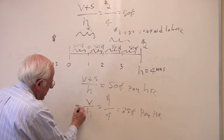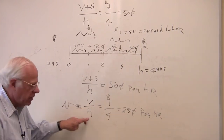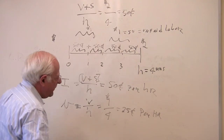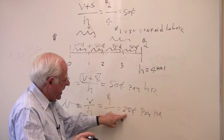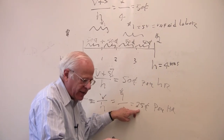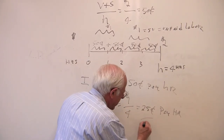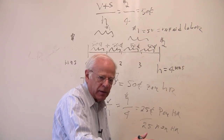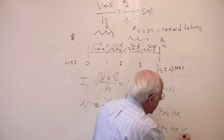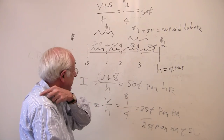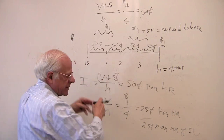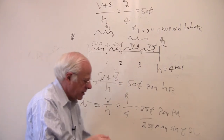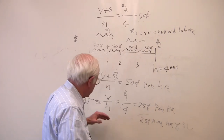Marx calls the wage per hour 'little v,' and he calls the yield per hour the intensity of labor. Every single hour the worker produces fifty cents and gets paid twenty-five cents — there's an excess of twenty-five cents that the buyer of labor power gets, not the seller. That's the surplus value per hour. Times the four hours worked, there's your dollar of surplus value — whether you do it on an hourly basis or on a total labor-hour basis, the surplus value is alienated to the capitalist.